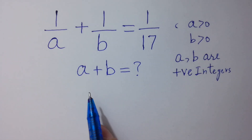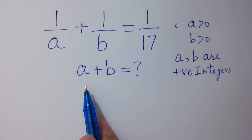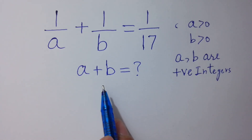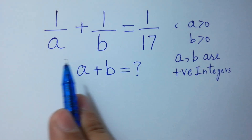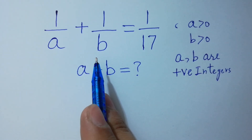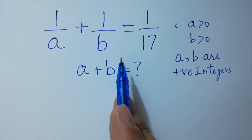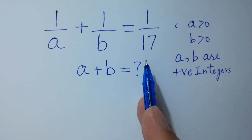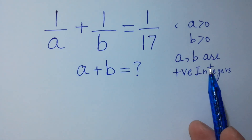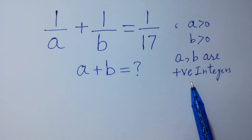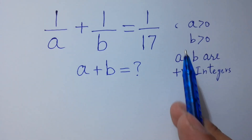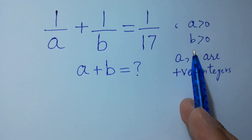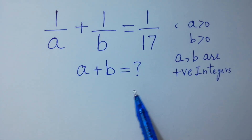Hello friends. Find the value of a plus b if 1 over a plus 1 over b equals 1 over 17, where a and b are positive integers, a greater than 0 and b greater than 0. Let's have a solution here.